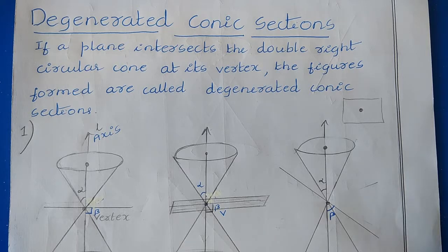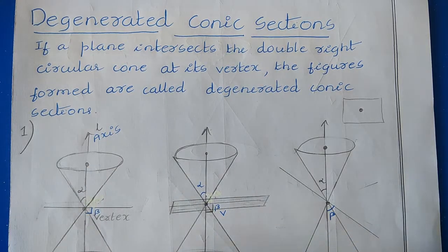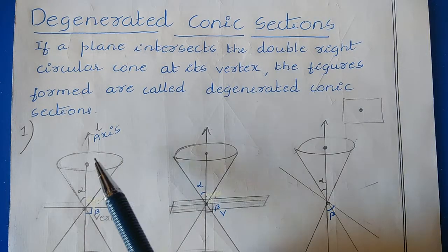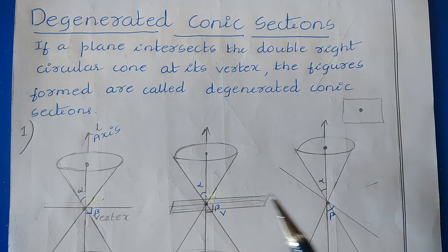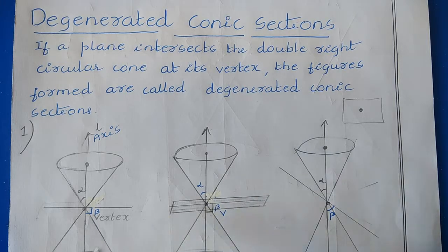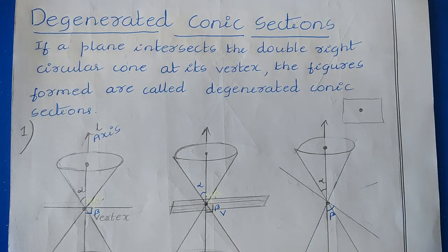In the last video we took the double right circular cone and saw that depending on the direction in which the plane intersects the cone, we can get different types of curves like circle, ellipse, parabola, and hyperbola. Now, in this case the plane intersects the cone at its vertex, and depending on that we are going to study different figures.